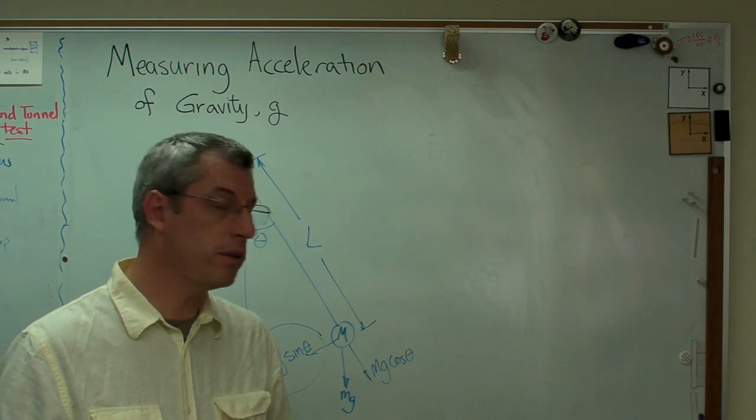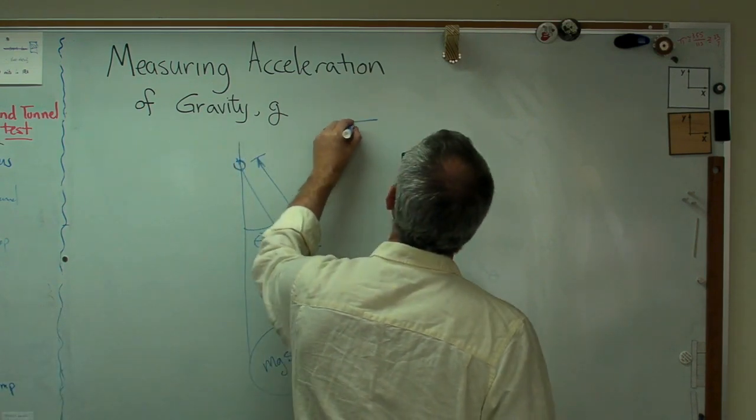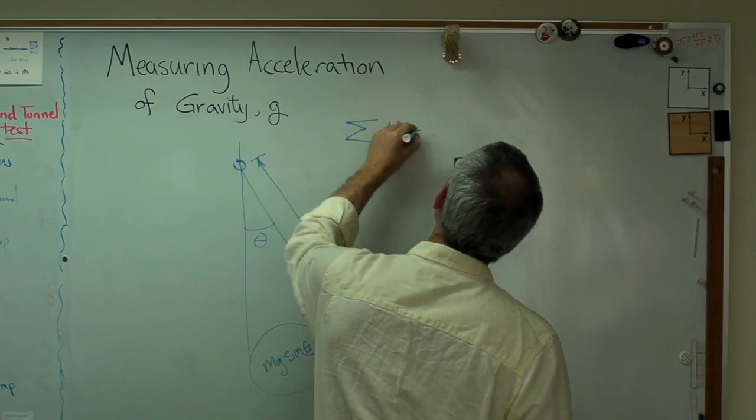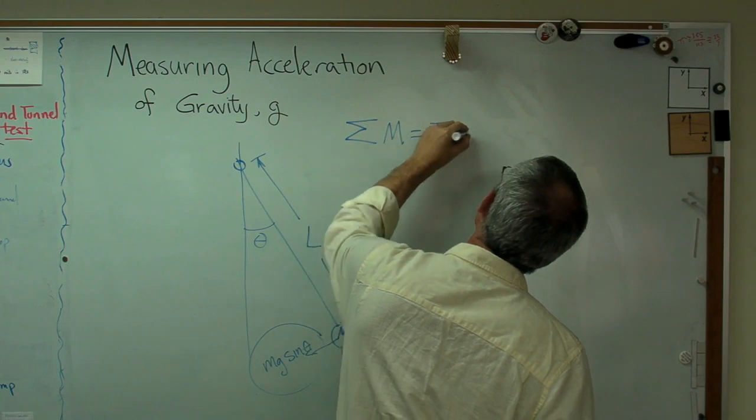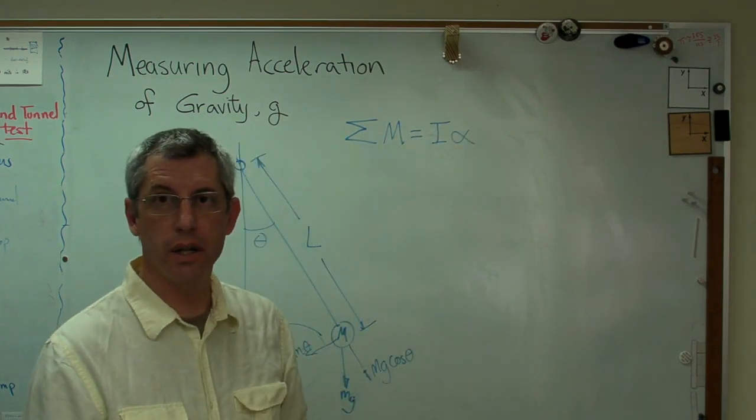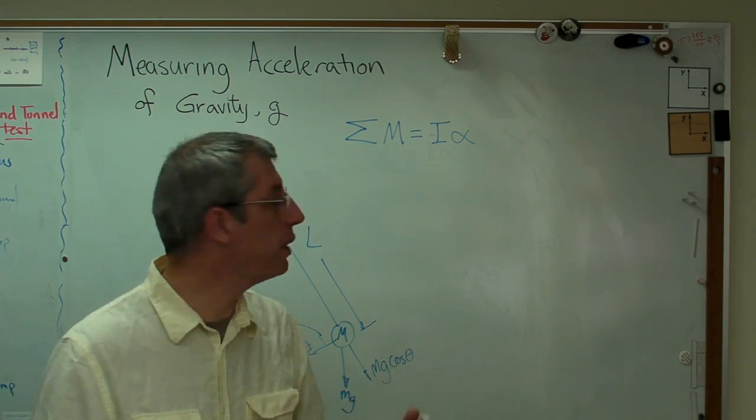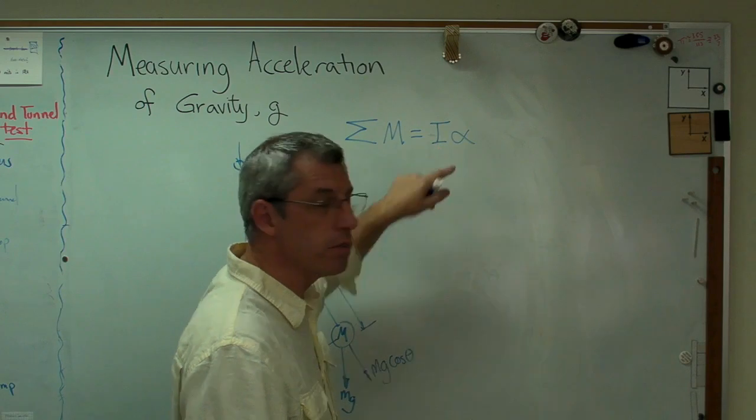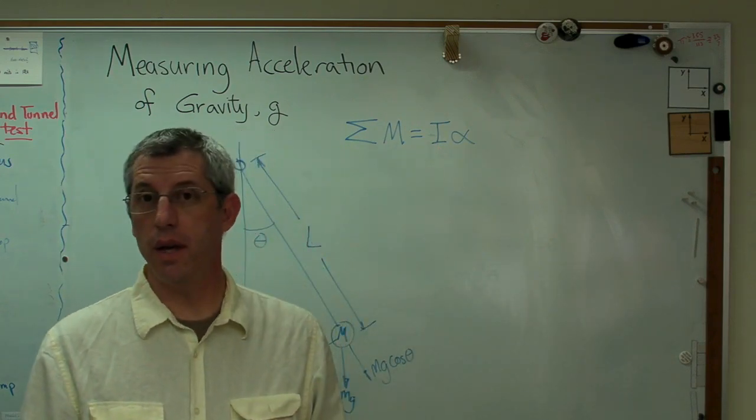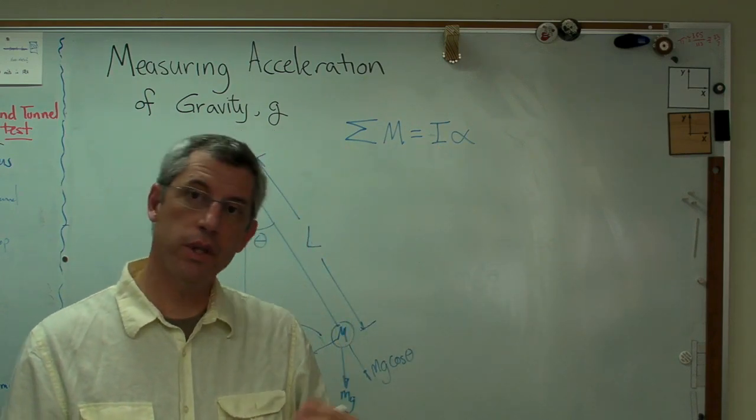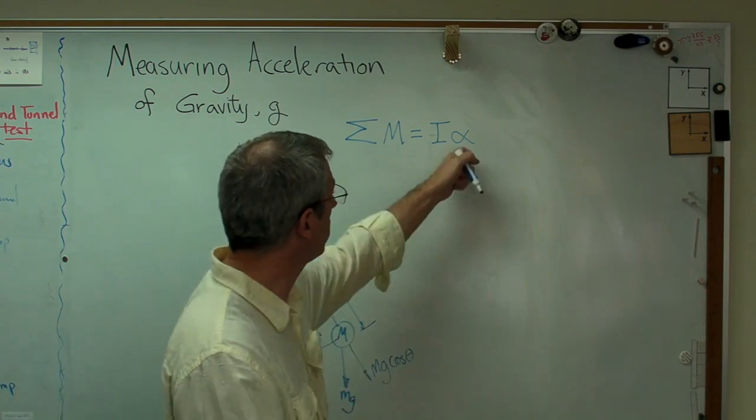The rotational version of that expression looks like this. The sum of the external moments equals the mass moment of inertia times angular acceleration. Mass is an object's resistance to acceleration. Mass moment of inertia is a measure of the object's resistance to rotational acceleration.